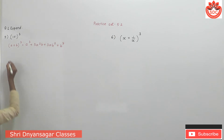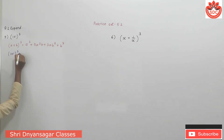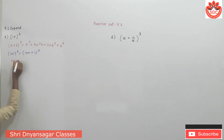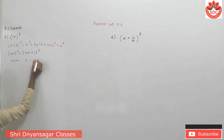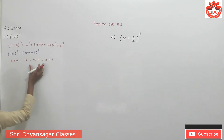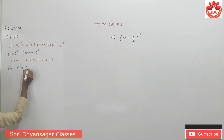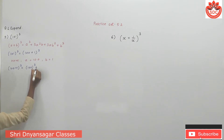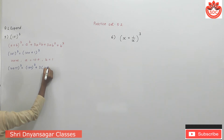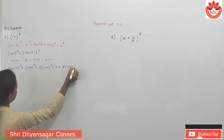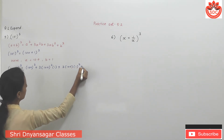We write 101³ as (100 + 1)³. Using the formula, the value of a is equal to 100 and the value of b is equal to 1. Putting the value of a and b in the expansion formula, we get (100 + 1)³ = 100³ + 3 × 100² × 1 + 3 × 100 × 1² + 1³.